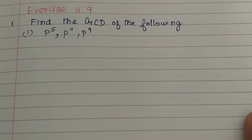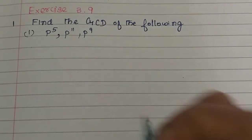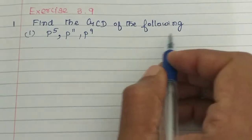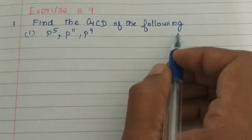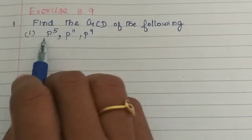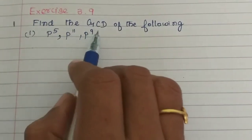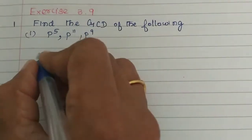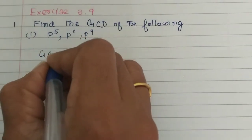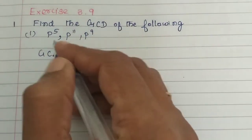Hello students. In this video we will see exercise 3.9. Find the GCD of the following. Here is the first subdivision: P5, P11, P9. This is the GCD — Greatest Common Divisor.